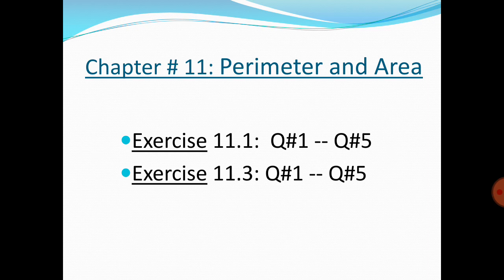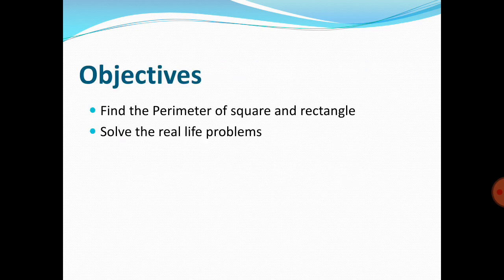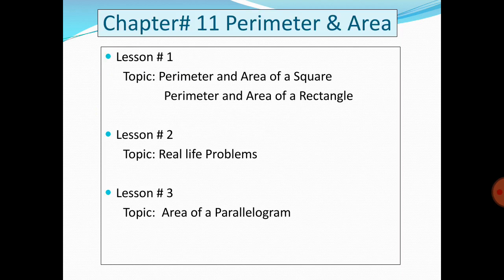This chapter includes two exercises: Exercise 11.1 and Exercise 11.3. Exercise 11.2 is excluded — please do mark it on your book. The objectives of this lesson are that you will be able to find the perimeter and area of a square and of a rectangle, and similarly solve real-life problems related to perimeter and area.